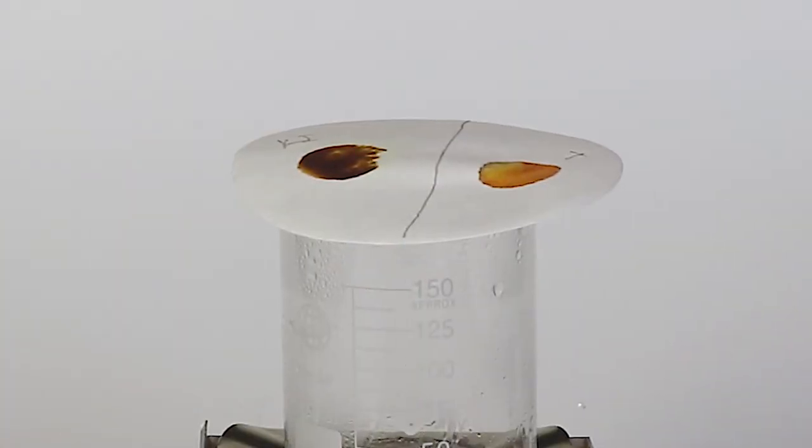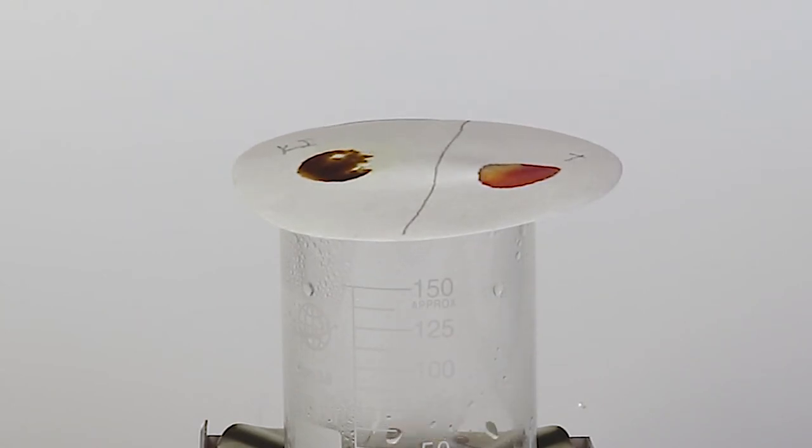On the second half of the filter paper, chlorine reacts with potassium iodide. This reaction produces potassium chloride and molecular iodine. It is the iodine which gives the drop its brown color.